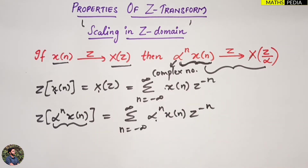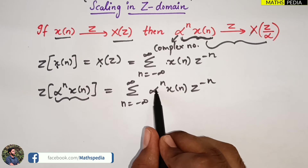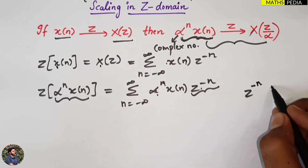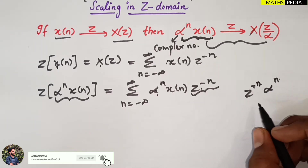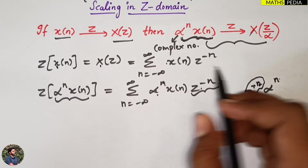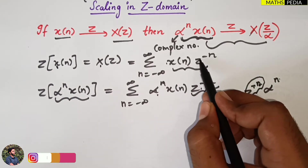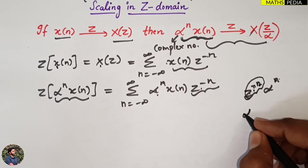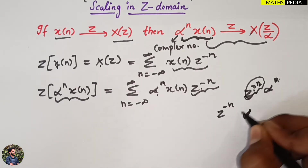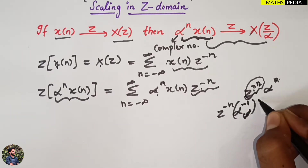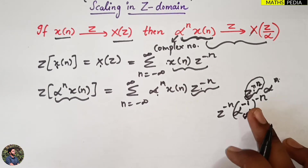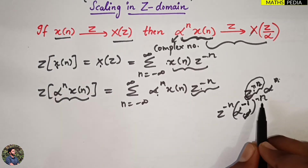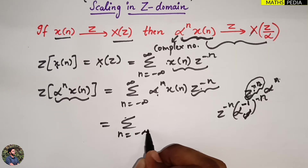Now I can combine alpha^n and z^(-n). However, z^(-n) must remain unchanged because we need to compare with the standard equation where z^(-n) is present. So instead, I rewrite alpha^n by changing the sign: alpha^n equals (alpha^(-1))^(-n). That is the same thing — alpha^(-1) whole thing to the power -n equals alpha^n.